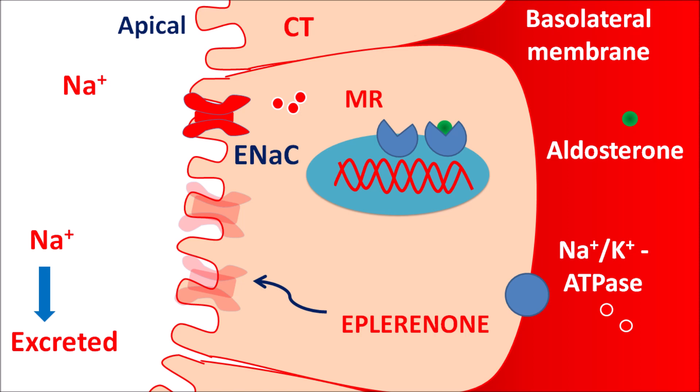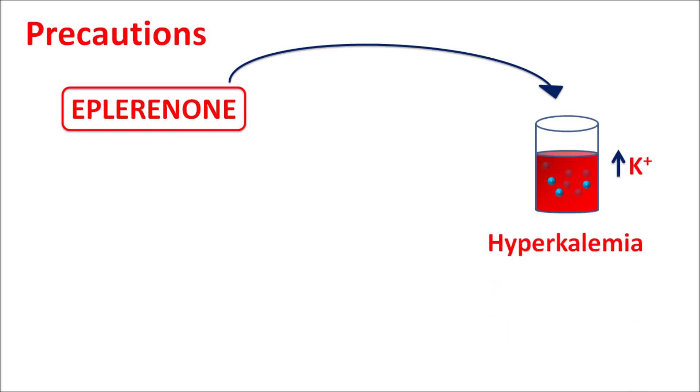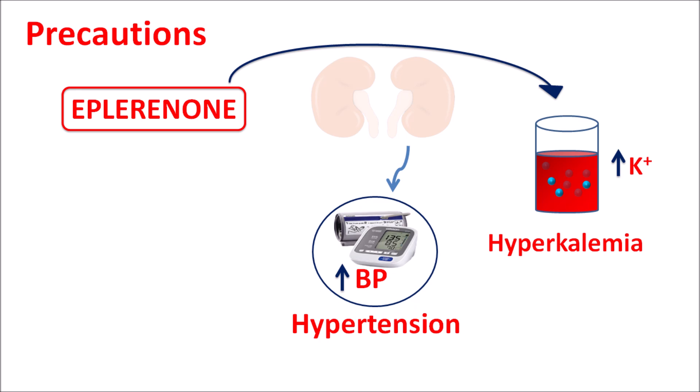By increasing sodium excretion, eplerinone reduces blood pressure as well as cardiac work. One of the important precautions of eplerinone is that it can produce hyperkalemia — it can increase serum potassium levels. That is why eplerinone is called a potassium-sparing diuretic. As more sodium is excreted, potassium is retained at the collecting tubules, resulting in elevated potassium levels. This hyperkalemia is more pronounced in patients with renal failure, so in such patients serum creatinine levels should be monitored before prescribing this drug.